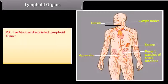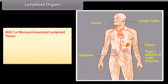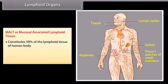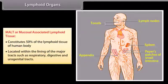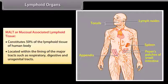MALT, or mucosal-associated lymphoid tissue, constitutes 50% of the lymphoid tissue of the human body and is located within the lining of major tracts such as the respiratory, digestive, and urogenital tracts.